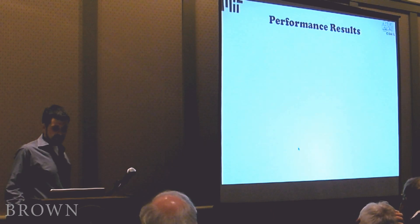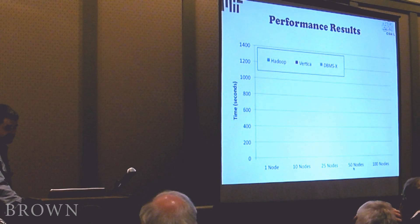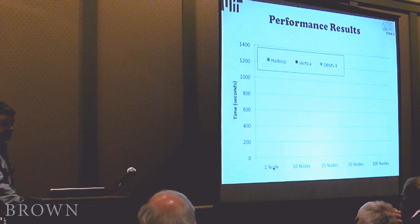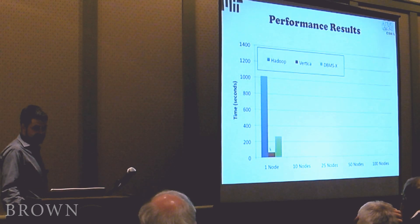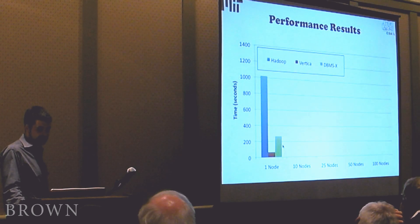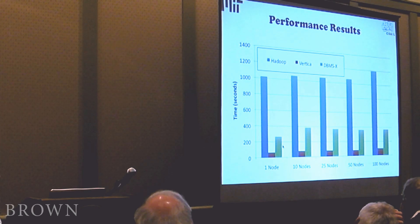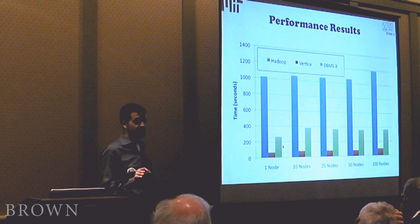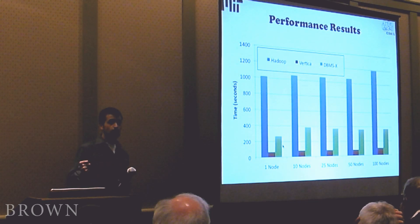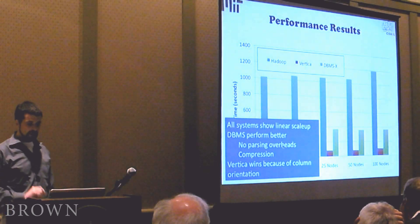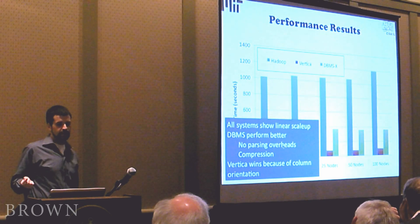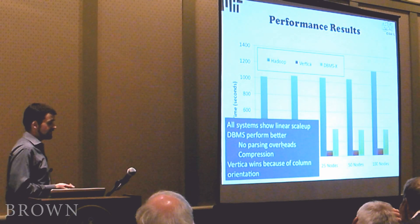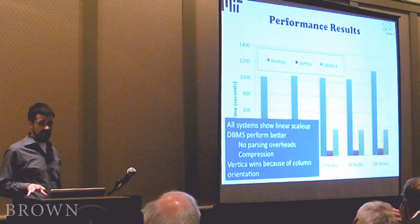Looking at the performance results for the aggregation query — along the x-axis is the number of nodes, and each node has the same amount of data, so as we go to more nodes we're adding more data. Hadoop is something like 15 times slower than Vertica and about four to five times slower than DBMSX. As we add more nodes the performance stays essentially the same, showing linear scale-up across all three systems. The database systems perform better because there's no parsing overhead like in the map job, and compression works very well. Hadoop does have compression built in, but we found it did not help performance in this case.